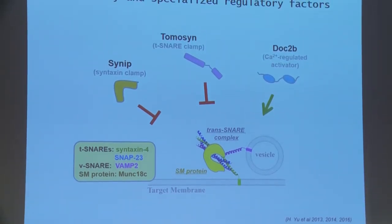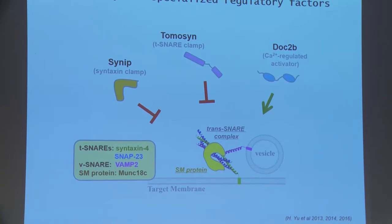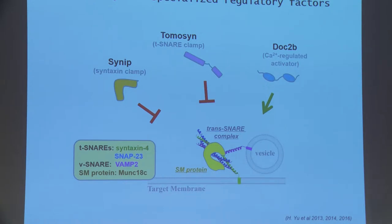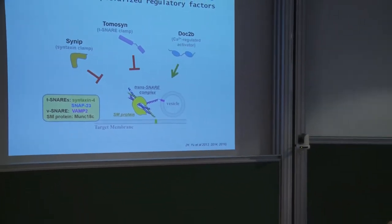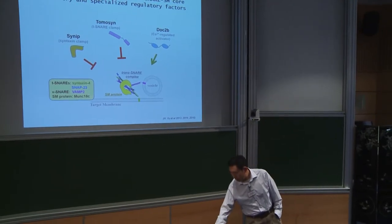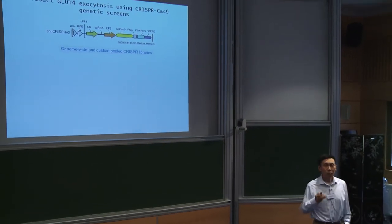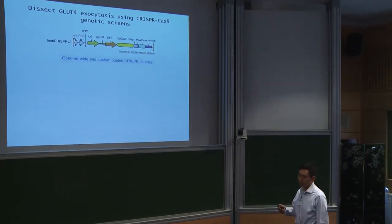In addition to the core engine, GLUT4 exocytosis also requires specialized regulatory factors such as CNIP, Thomason, and others. Our previous work focused on biochemical dissection of these molecules, but since most of this work has been published, I won't go into details. I believe these proteins only represent a minor fraction of the entire regulatory network for GLUT4 exocytosis. The sequencing of the human genome predicted a large number of membrane proteins, and for the majority we know virtually nothing. Therefore, the most important direction is to comprehensively identify new regulators for GLUT4 exocytosis.